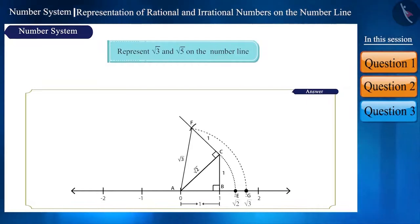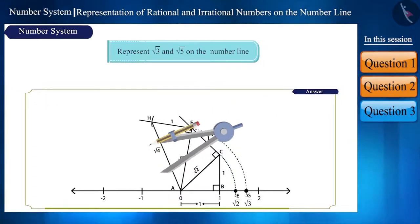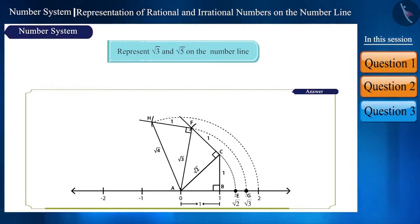Friends, we can represent root 4 using the same process. And now we get the arc cutting at point 2. This is because the value of root 4 is 2.